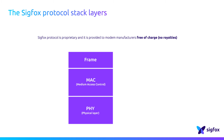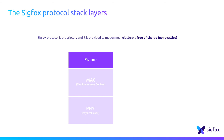No royalties are charged. Let's have a look at the different layers of this SIGFOX protocol stack. Firstly, the frame layer gets the payload provided by the application layer and generates the radio frame, in which a sequence number is systematically added.